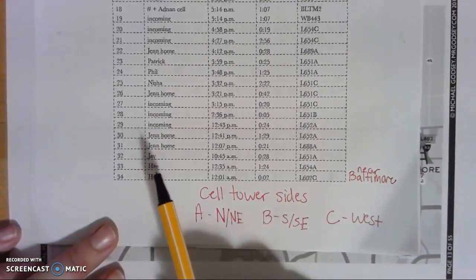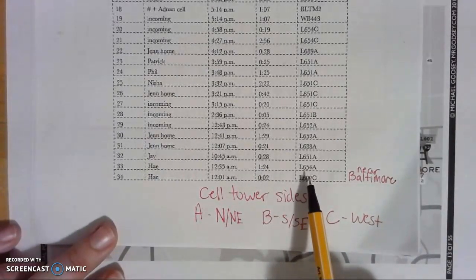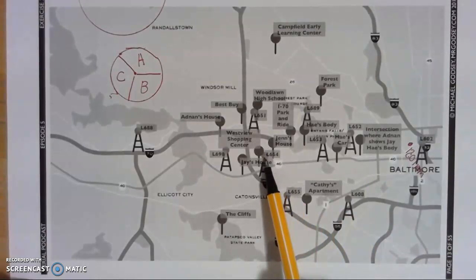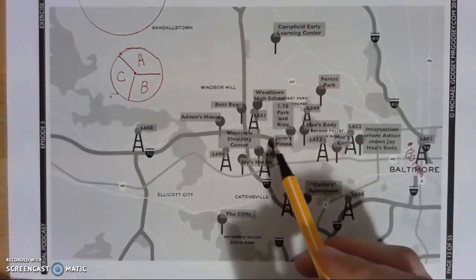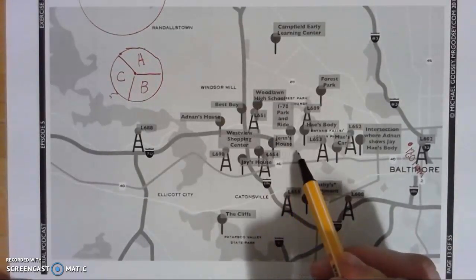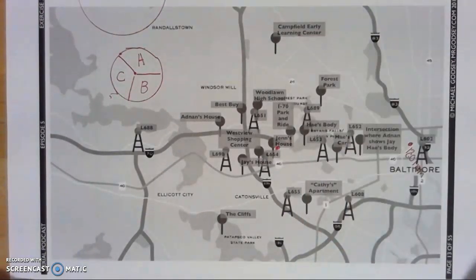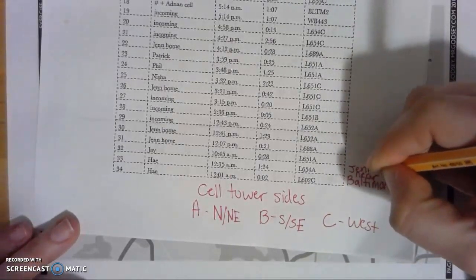Then a little while later, Adnan called Hae again at 12:35 AM. It was one minute and 24 seconds long, and this was from tower L654A. So looking at our map, L654 is right here. Since it's A, I know it has to be somewhere up in this quadrant — which is where you kind of imagine where Adnan would be. He's probably at Jen's house, so I'll drop a little pin dot and mark 12:35 AM, writing Jen's house on my chart.